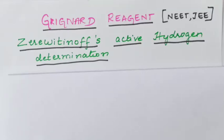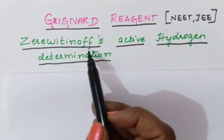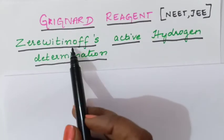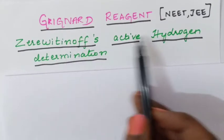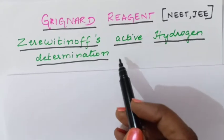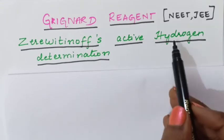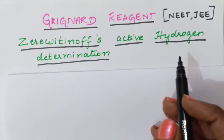Hello students, welcome to Ishwari Taniksha channel. This is your Ishwari ma'am. In this video, we are going to learn Zerevitinov's active hydrogen determination from the chapter Grignard reagent. Zerevitinov is the name of the scientist who gave a method to find out the number of active hydrogen in a given compound.